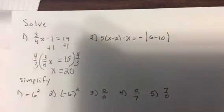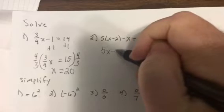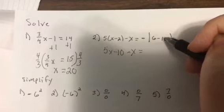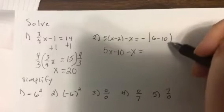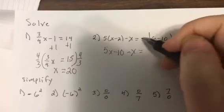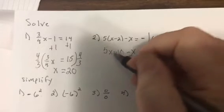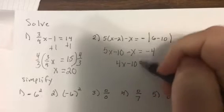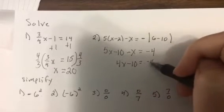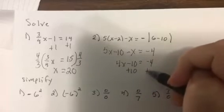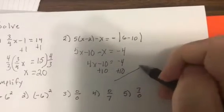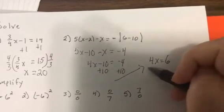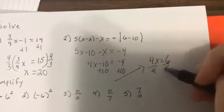This one, distribute the 5: 5x minus 10 minus x equals 6 minus 10 is negative 4. The opposite would be 4. Same side, so combine: 4x minus 10 equals negative 4. I'm going to add 10 and 10, so 4x equals 6, divided by 4, so x equals 3 halves.